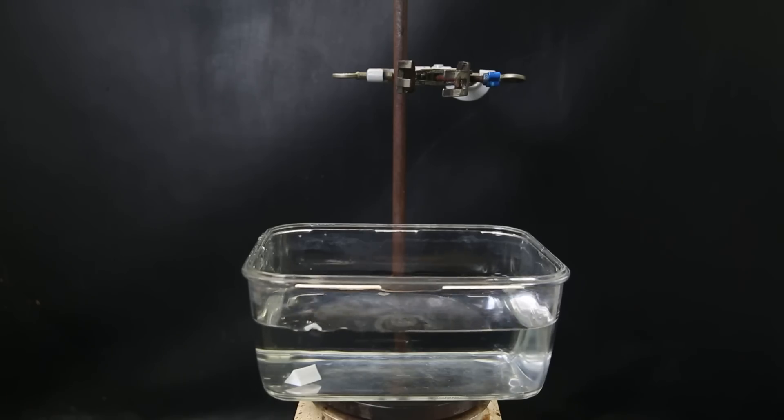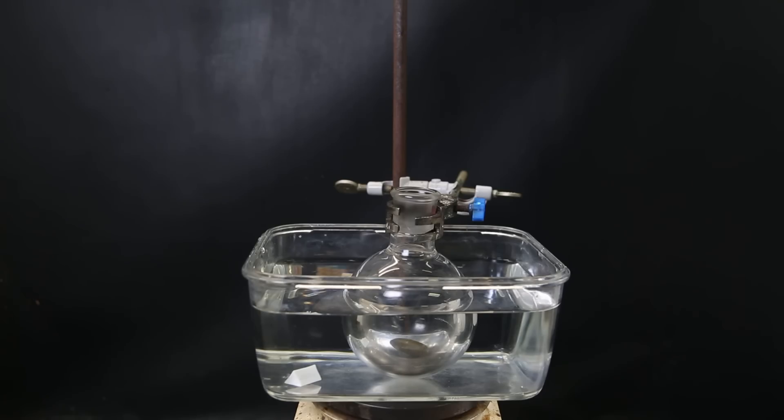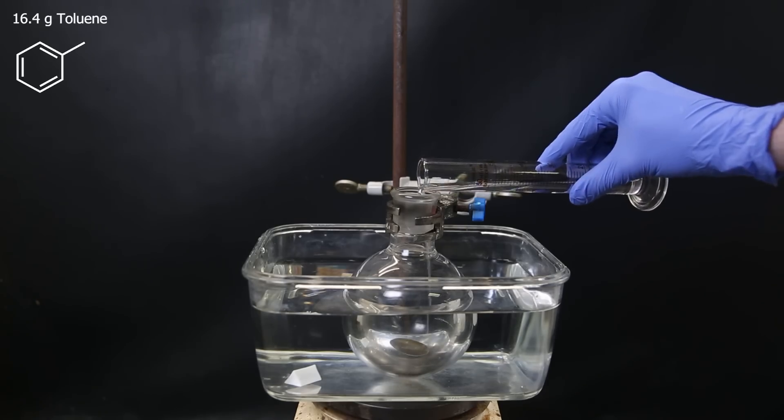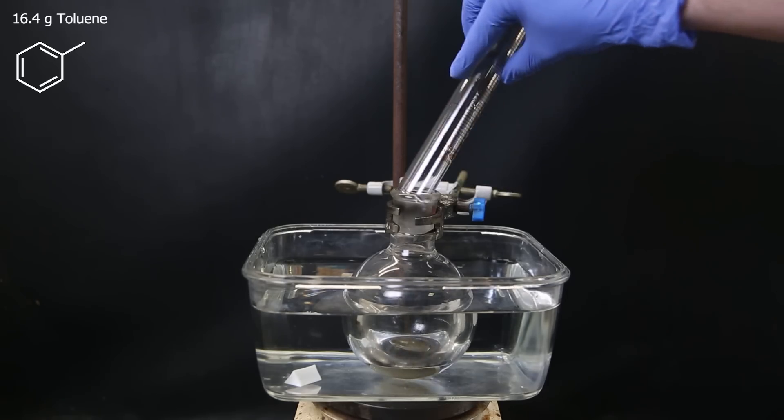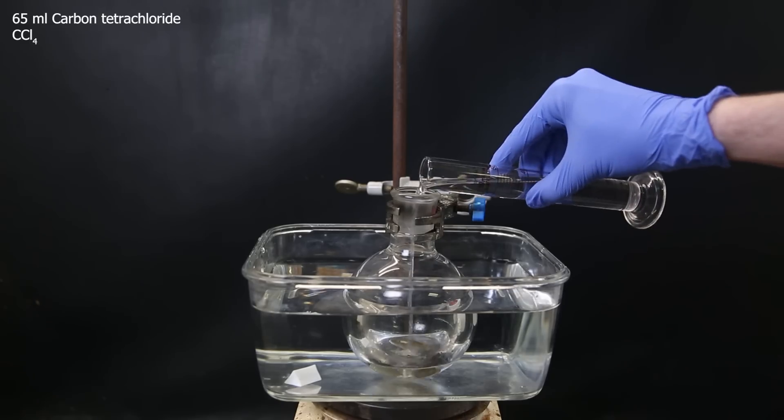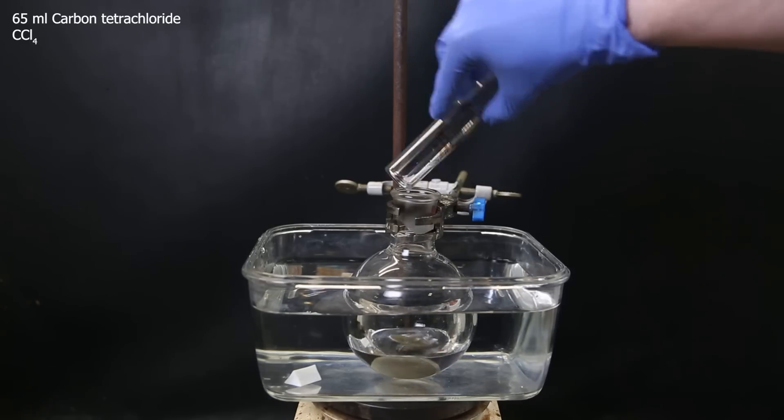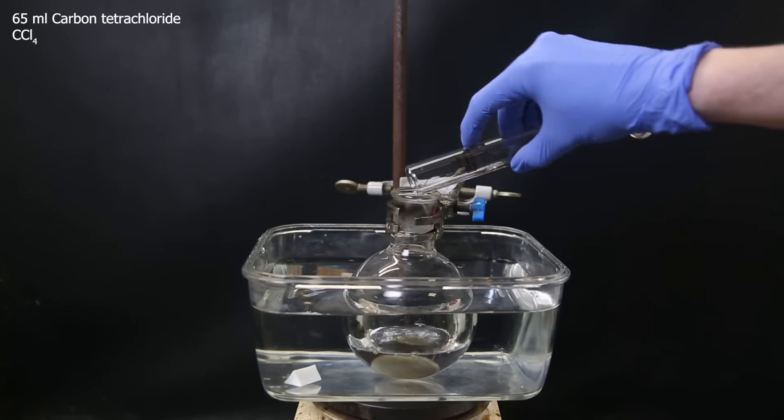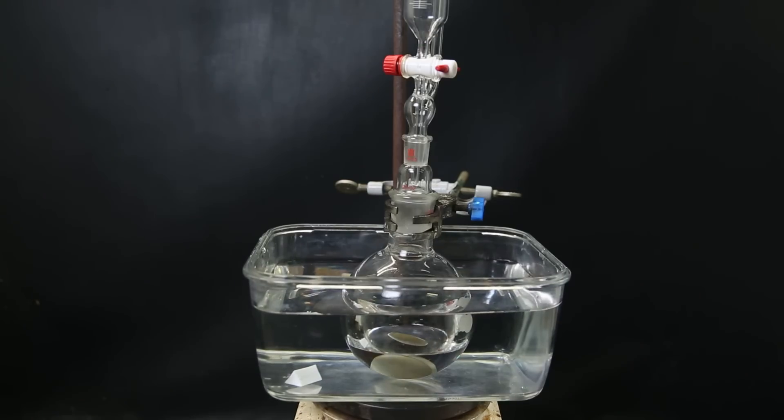So to get started, I set up a water bath and put in a flask with a stir bar. To that, I add 16.4 grams of toluene, and then 65 mils of carbon tetrachloride as a solvent. I attach an adapter with a small dropping funnel, because unfortunately, I broke my big dropping funnel.